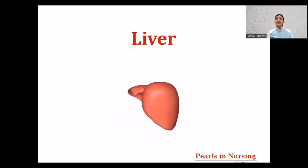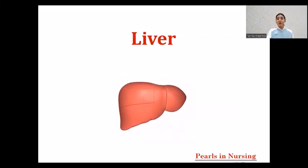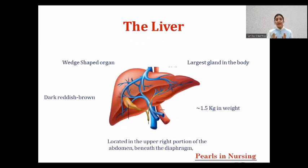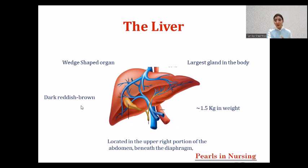Hello and welcome everyone. In today's class we'll be talking about the liver. When we talk about liver, we all know that liver is a wedge-shaped organ — its shape is like a triangle, as you can also see from the video. It is the largest gland of the body, dark reddish brown in color, and the weight of the liver is around 1.5 kilograms.